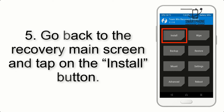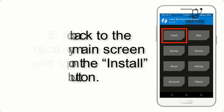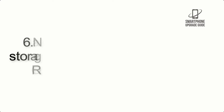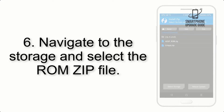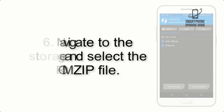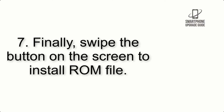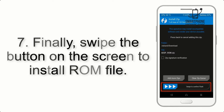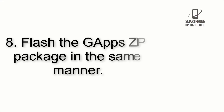Step 5: Go back to the recovery main screen and tap on the Install button. Step 6: Navigate to the storage and select the ROM zip file. Step 7: Finally, swipe the button on the screen to install the ROM file.